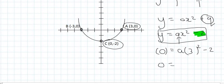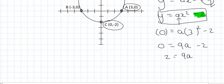So 0 on the left is equal to, now 3 squared is 9, and 9 times a is just going to be 9a minus 2. And then to get a by itself, I'm going to take the 2 over to the left. And then to get a alone, you'll divide by 9. And so you'll end up with 2 over 9.